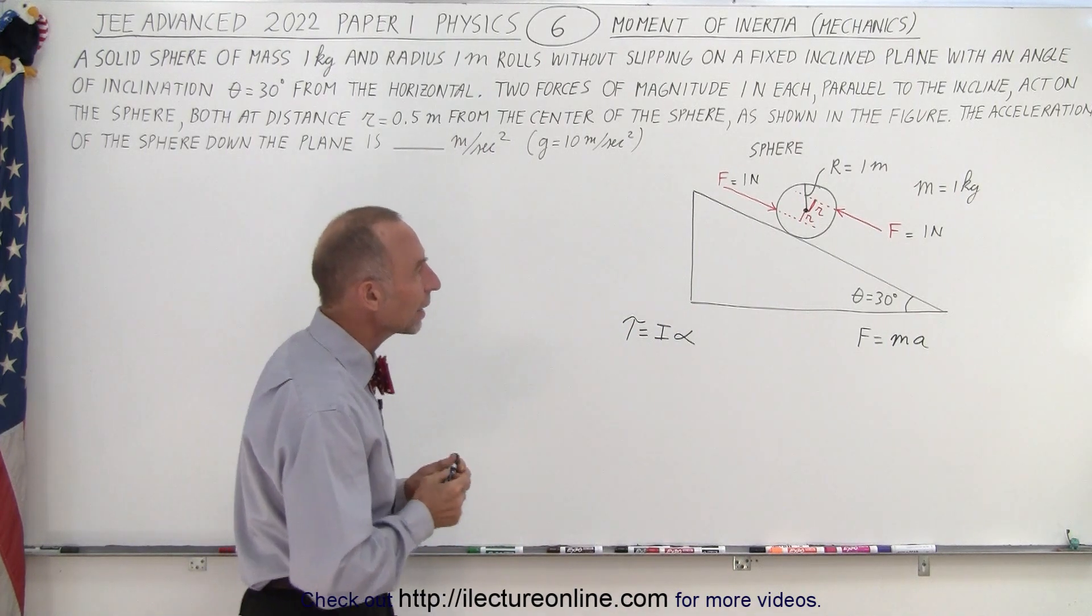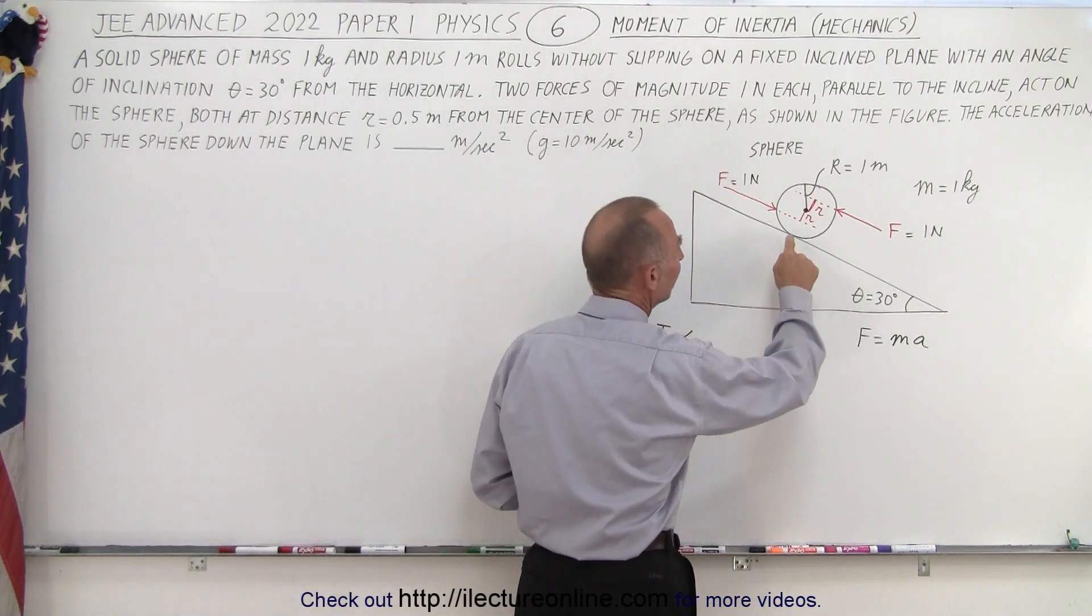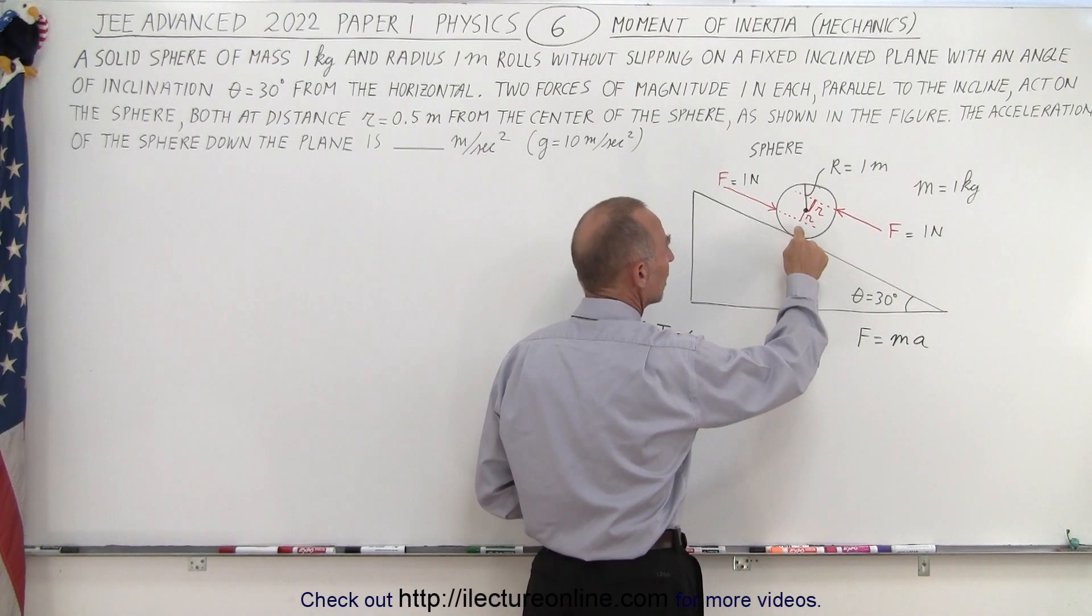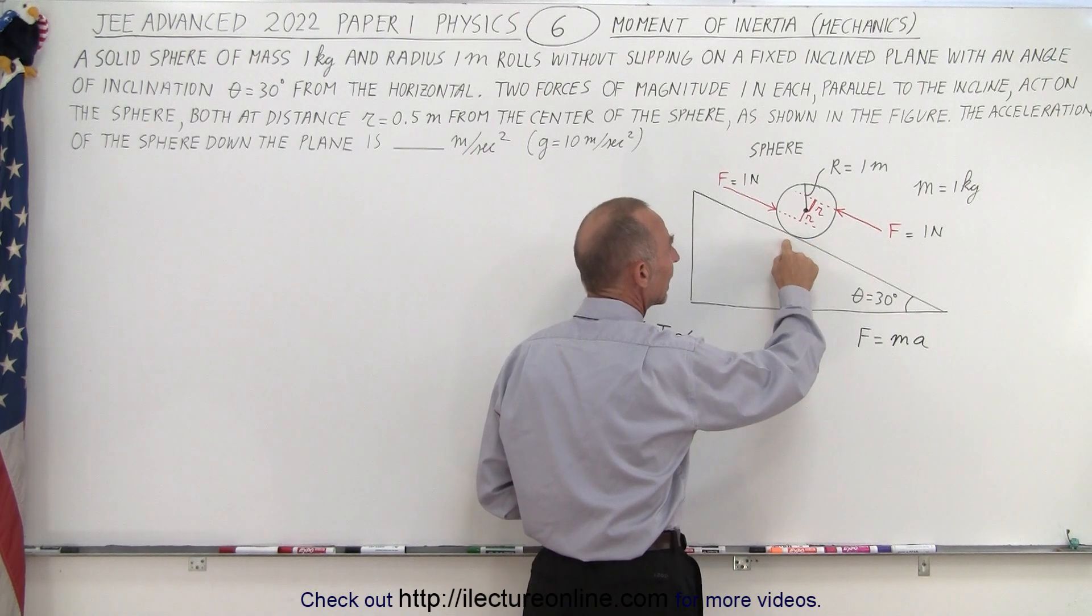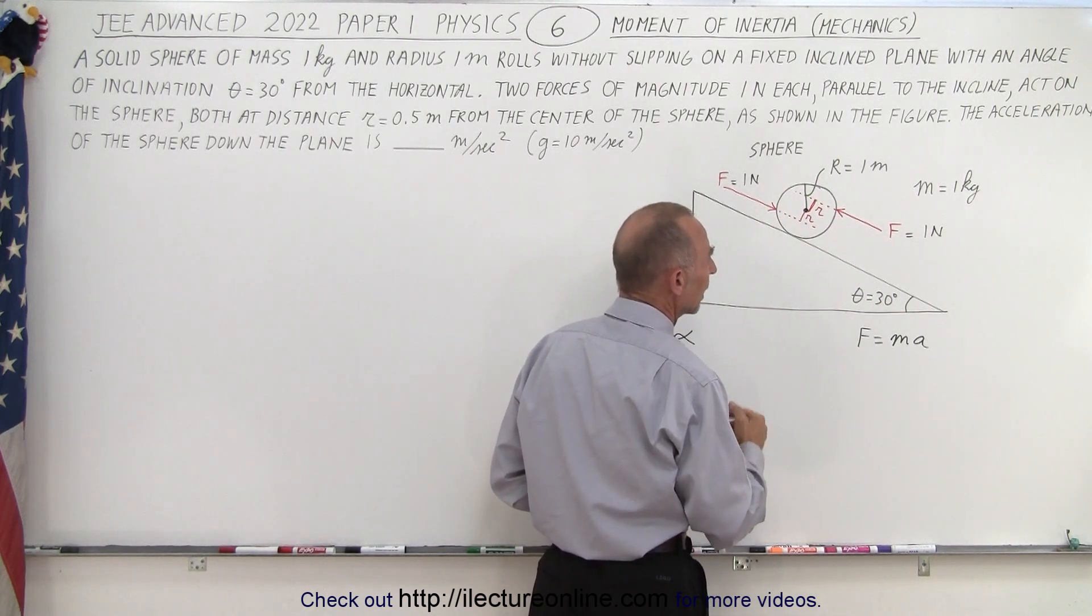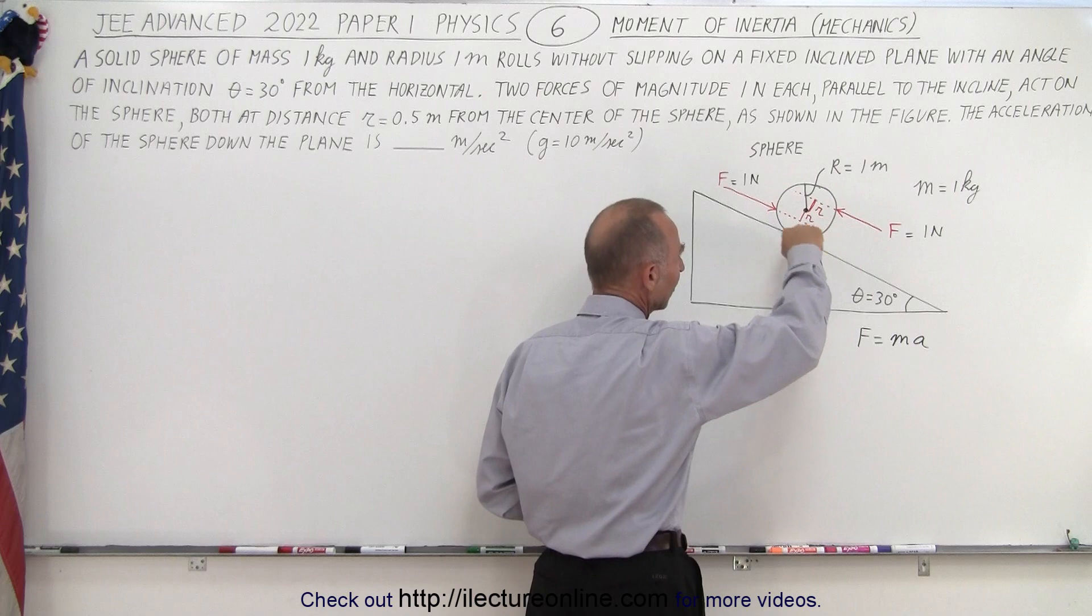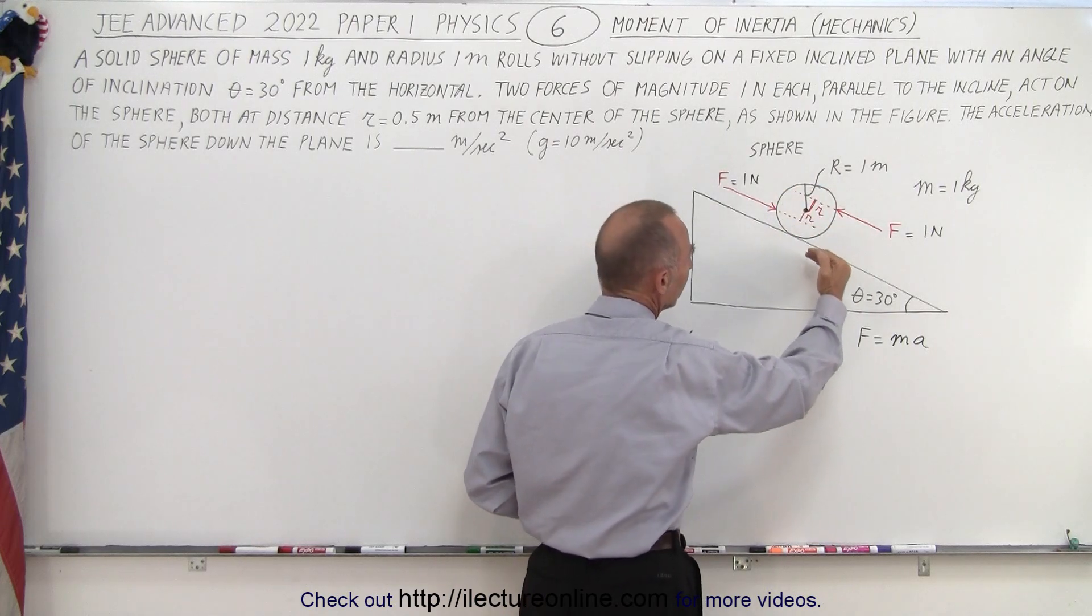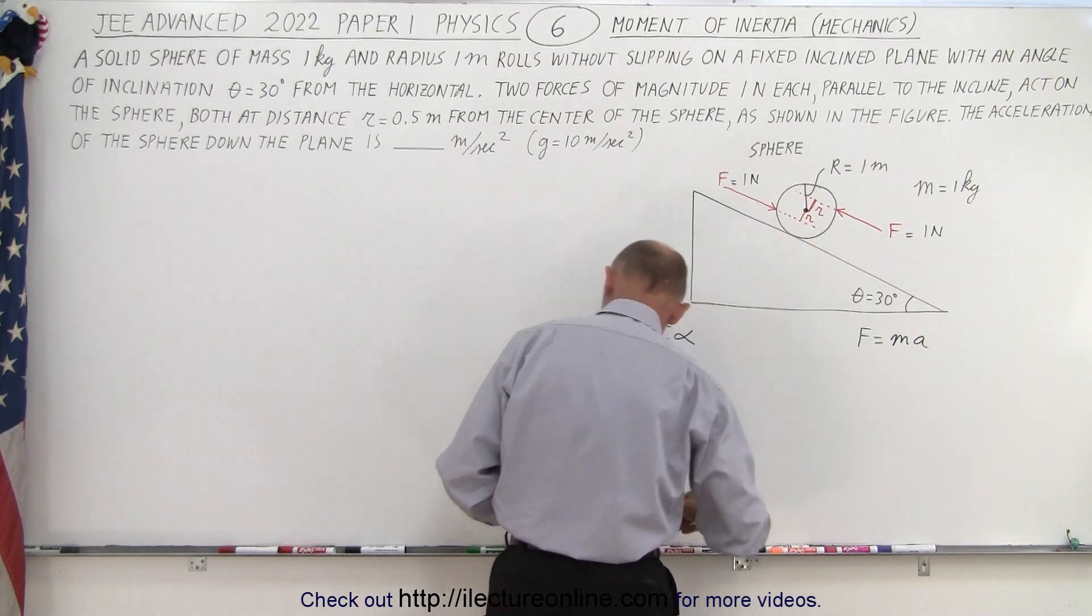The reason why is, it is the force of friction between the ball and the inclined plane that gives it the torque that will rotate it down the hill. So, it turns out that as the ball is rolling, there will be a force of friction in this direction.